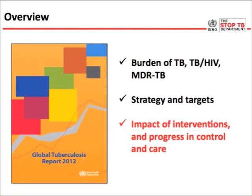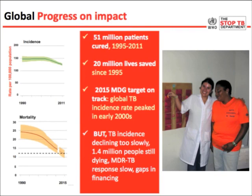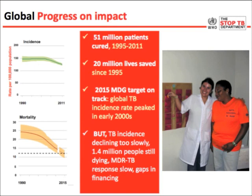Regarding the impact of interventions and progress: 51 million patients have been cured between 1995 and 2011, and 20 million lives were saved since 1995 when WHO introduced the DOTS strategy. The 2015 Millennium Development Goal target is on track, but it was not ambitious — the epidemic has peaked and is coming down, but too slowly. 1.4 million people still die of a treatable disease, the MDR-TB response has been slow, and financing gaps persist.